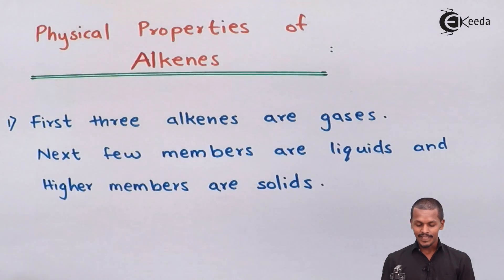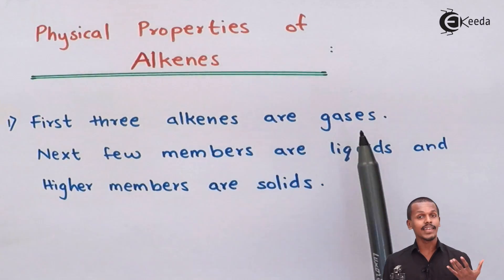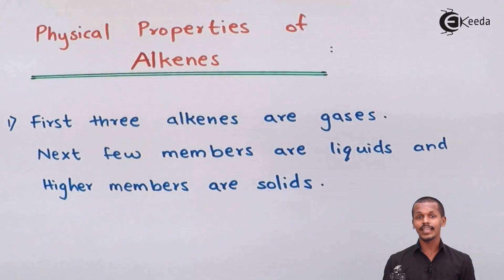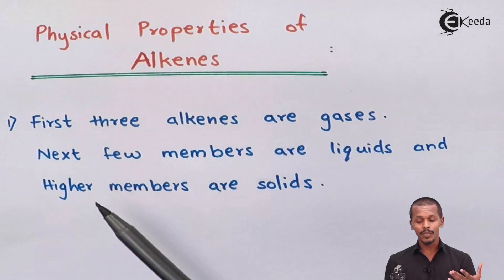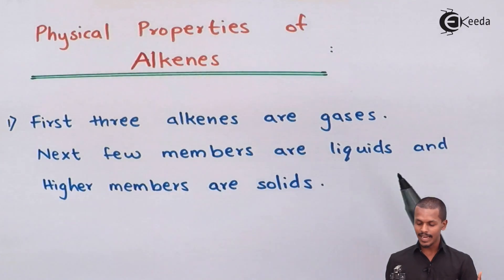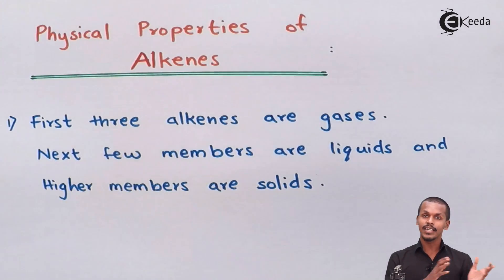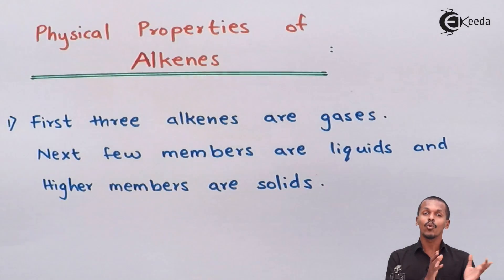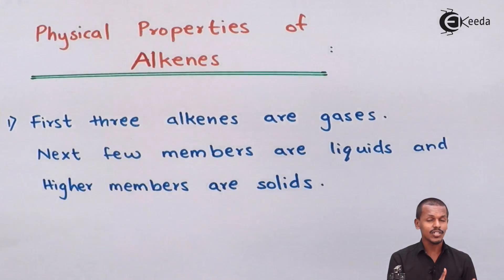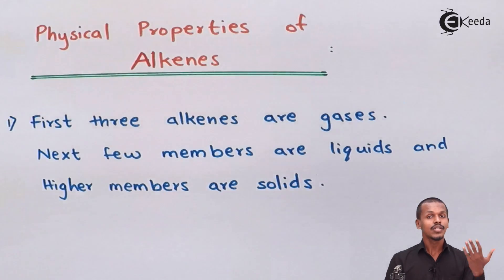The first three alkenes — ethene, propene, and butene — are present in a gaseous form. The next few members are present in a liquid phase, and the higher members are present in a solid phase.